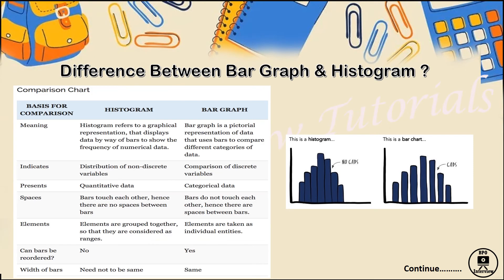We will see the difference between bar graph and histogram. Why do we need a histogram if we already have a bar graph that can be easily designed in Excel? The main difference is that in a bar graph there is a gap between the bars, but in a histogram the bars are connected with each other, meaning there is a continuous flow of data. Histogram represents quantitative data, whereas bar graph represents category-wise data.